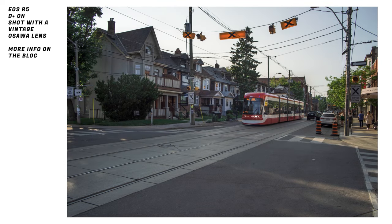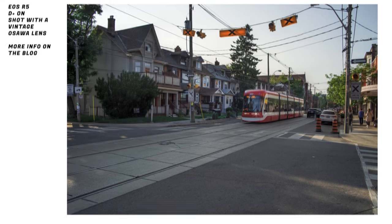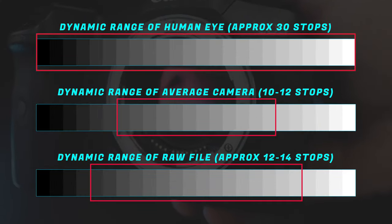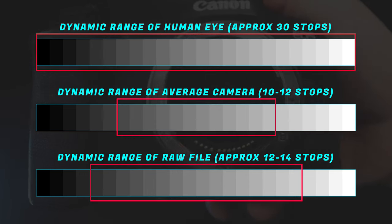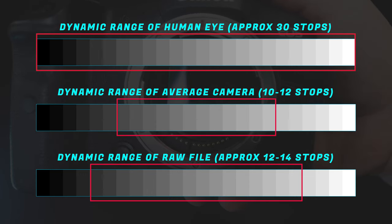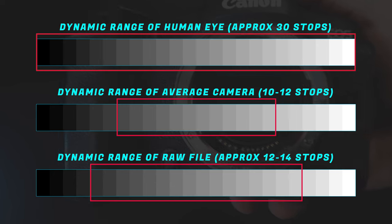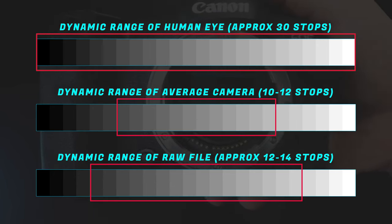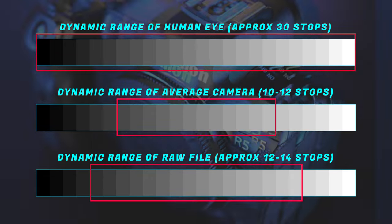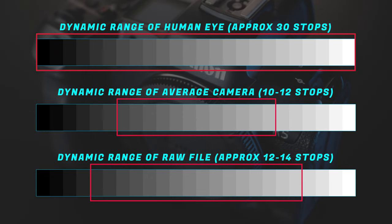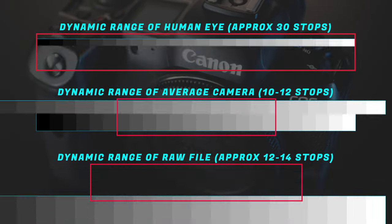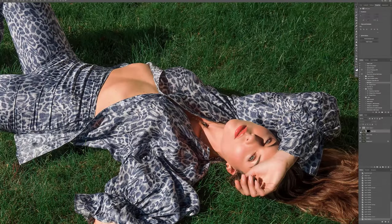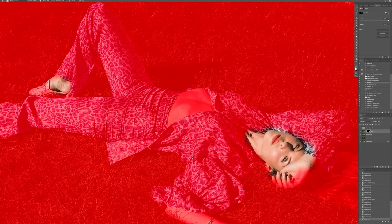Dynamic range refers to the ability of a camera to capture a full range of tones from the darkest shadows to the brightest highlights. It measures the difference between the darkest and brightest areas you can record in an image. Dynamic range is measured in stops, with each stop representing a doubling or halving in the amount of light. A higher dynamic range means the camera can capture a wider range of tonal values, resulting in more detail and more flexibility when editing.